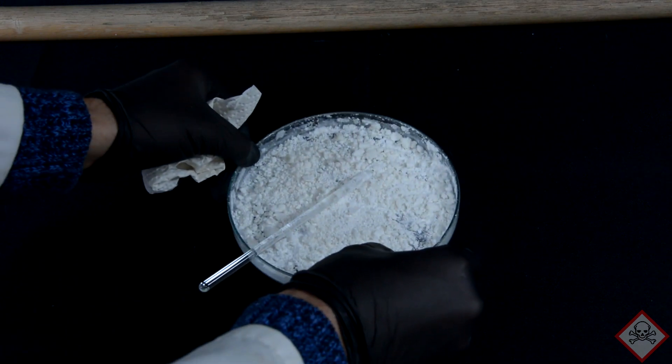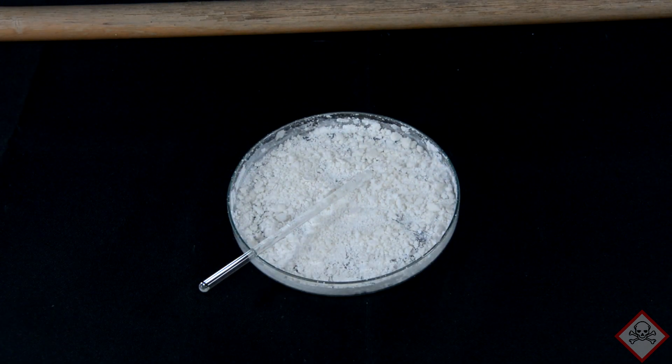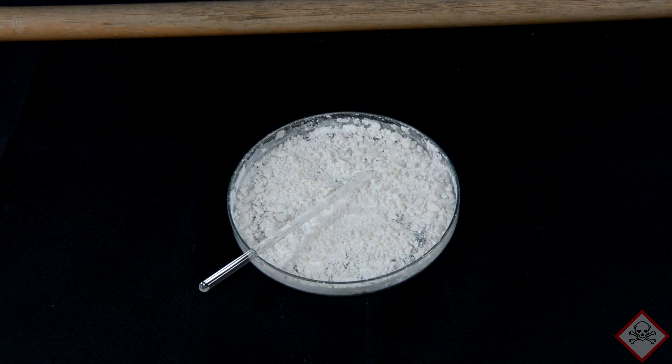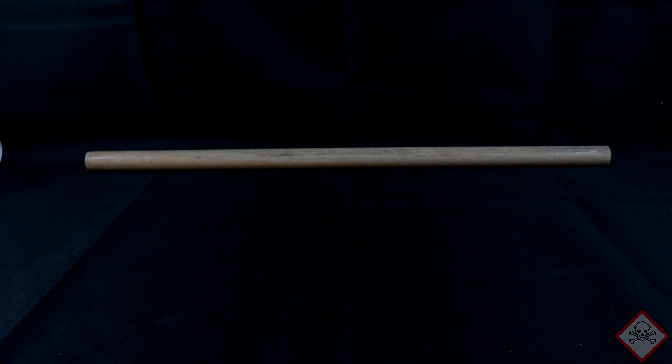Now we only need to test it and verify that we actually have barium chloride. Barium chloride can be used to identify the presence of sulfate ions in a solution because it produces insoluble barium sulfate, which precipitates out and renders the solution milky and opaque.